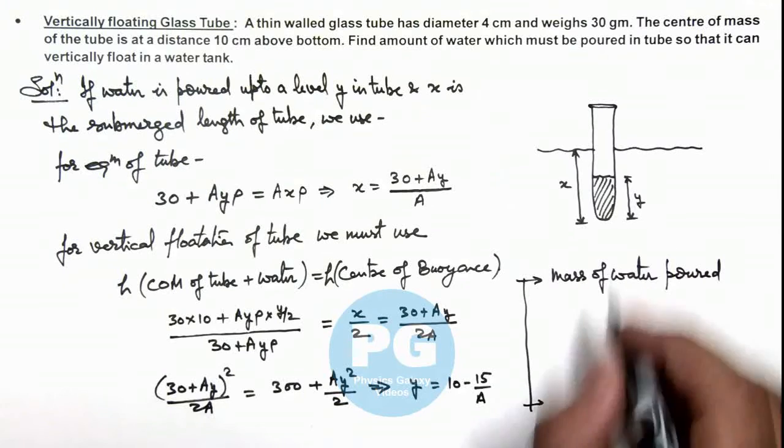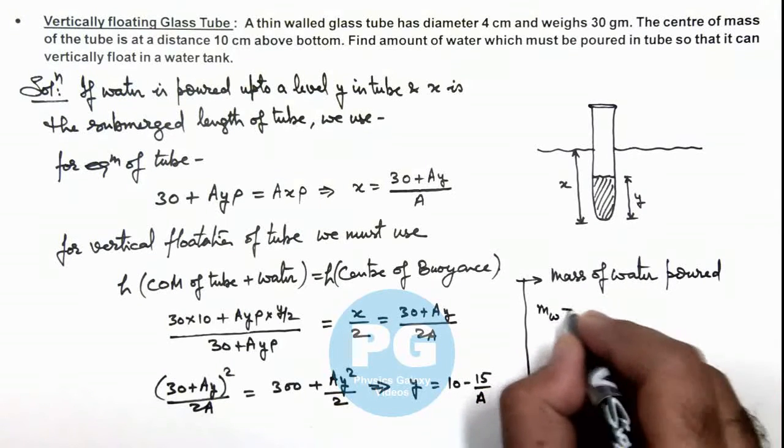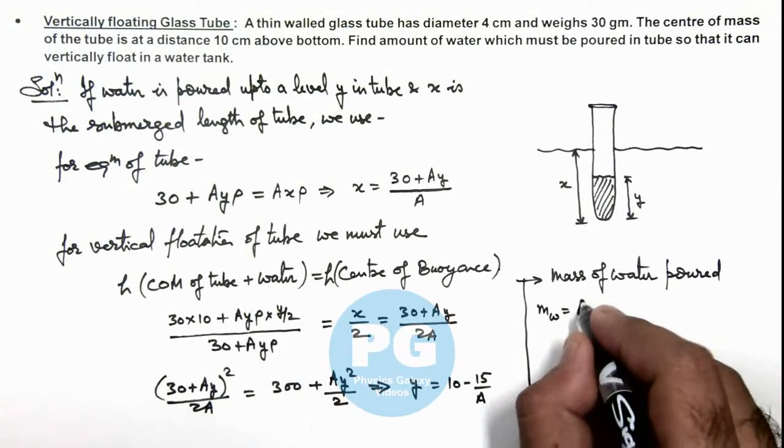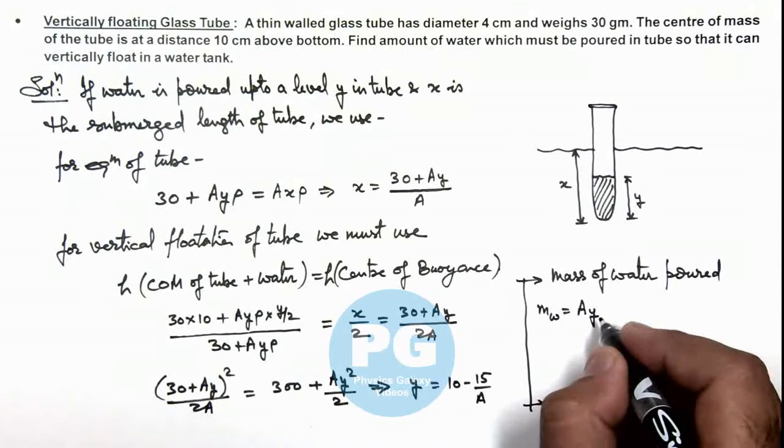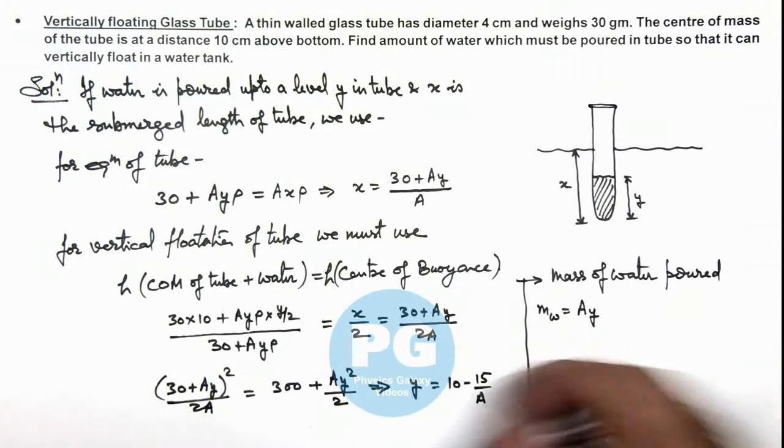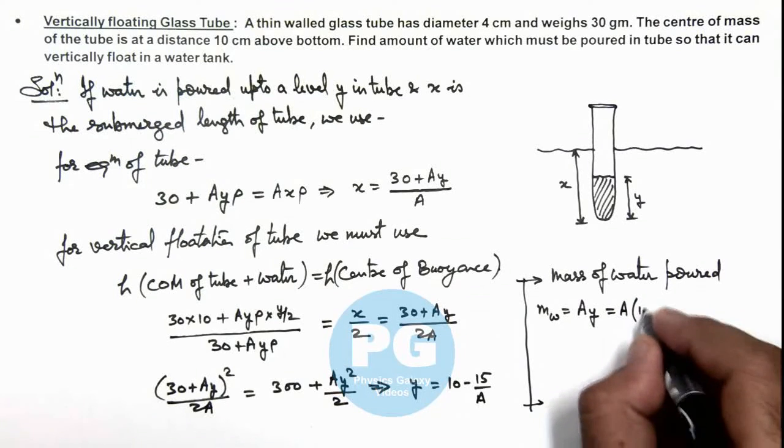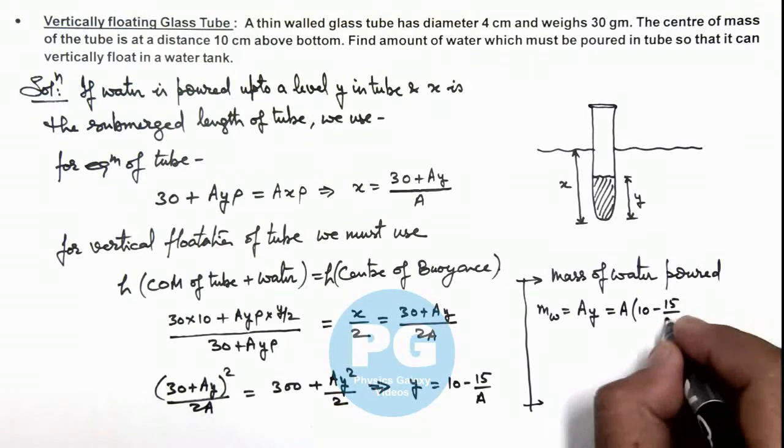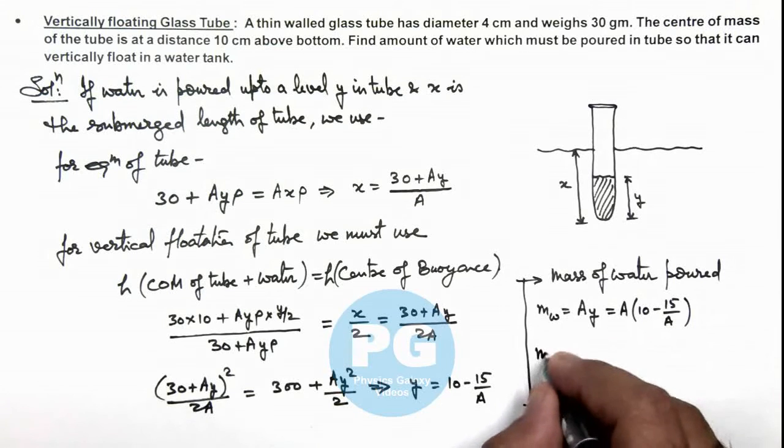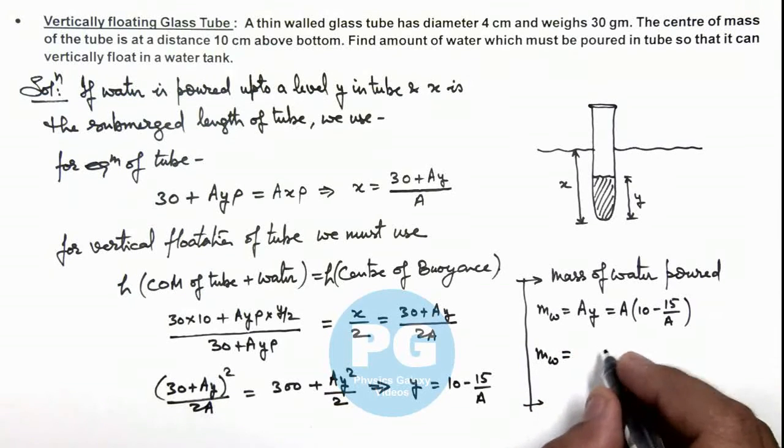Water poured in the tube is equals to A_y times y times rho we can take as 1 as we are solving the problem in CGS. This can be written as A_y multiplied by 10 minus 15 by A_y. So this mass of water we are getting is 10 A_y minus 15.